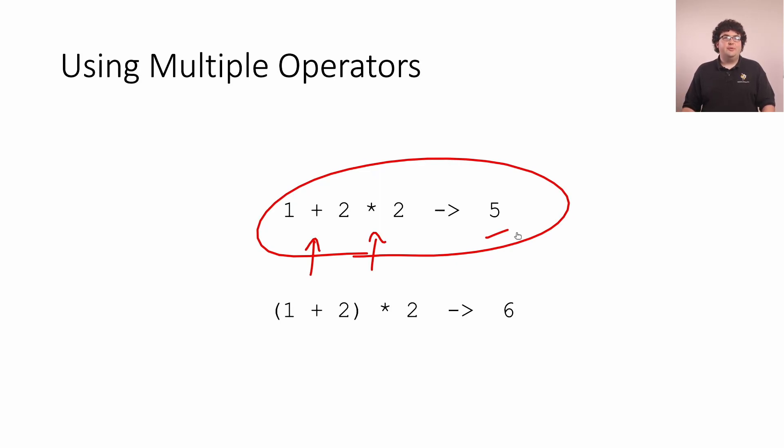Remembering the exact precedence rules can sometimes be difficult, so it's usually better to be explicit about the ordering you're expecting. We can do this by adding parentheses to our expression. By adding parentheses here, we've told the computer to evaluate the addition before the multiplication, so our result is now 6.